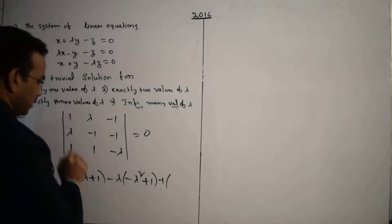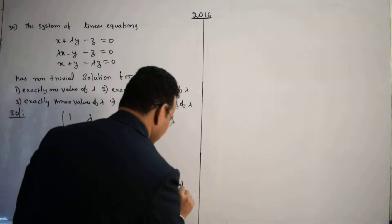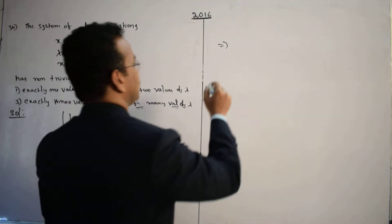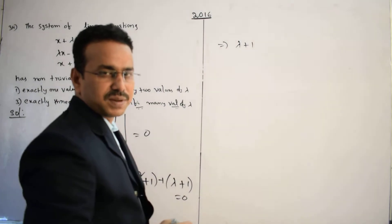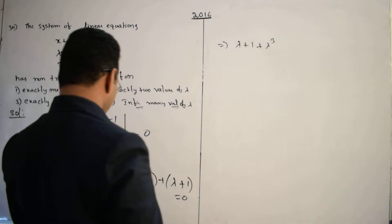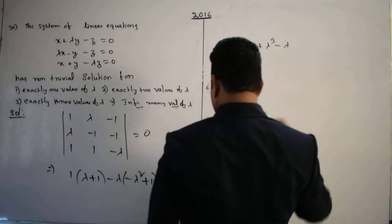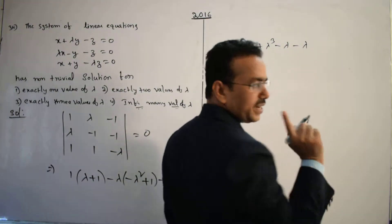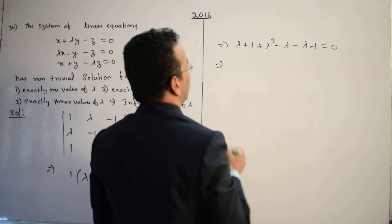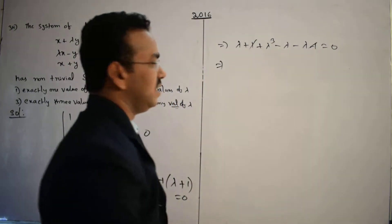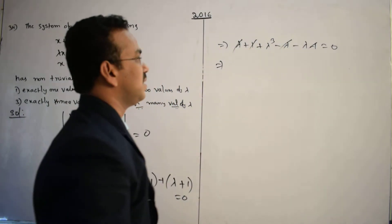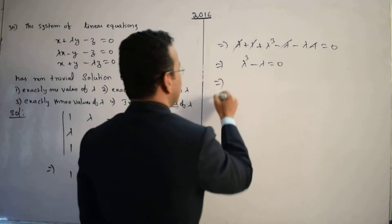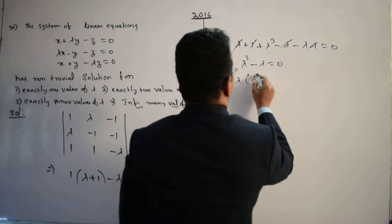Continuing the expansion and simplifying: collecting terms, the constants cancel (-1 + 1 = 0), and the linear λ terms cancel. We are left with λ³ - λ = 0.